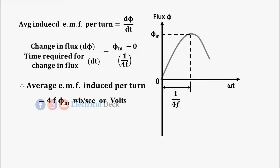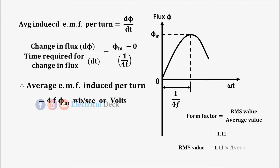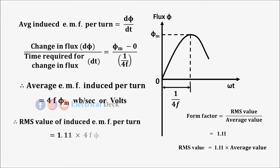For a sinusoidal quantity, the form factor is equal to RMS value divided by average value, which equals 1.11. Therefore, the RMS value equals 1.11 times the average value. Since we know the average value of induced EMF is 4f·φm, the RMS value of induced EMF per turn is given by 4.44·f·φm.